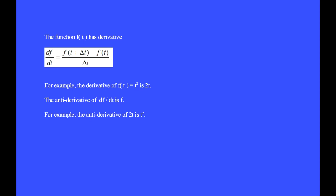The antiderivative of df/dt is f. For example, the antiderivative of 2t is t².